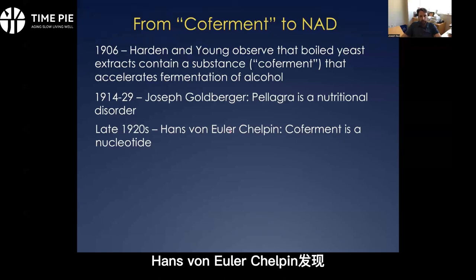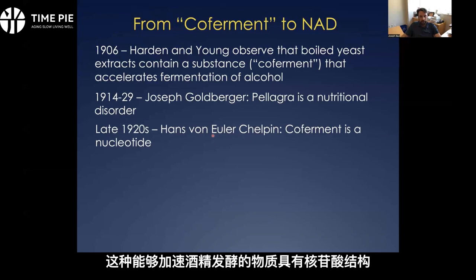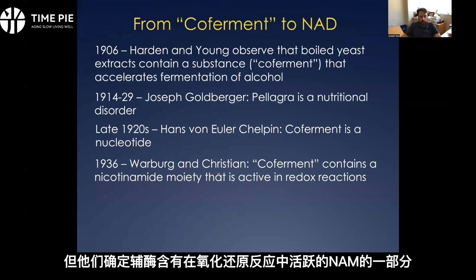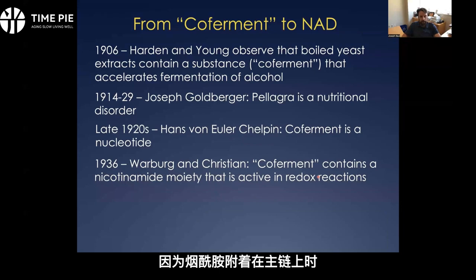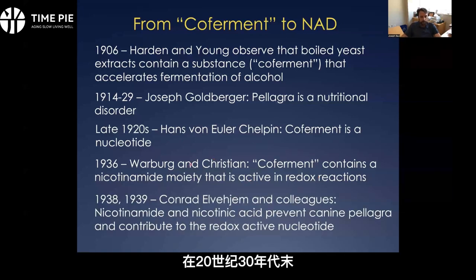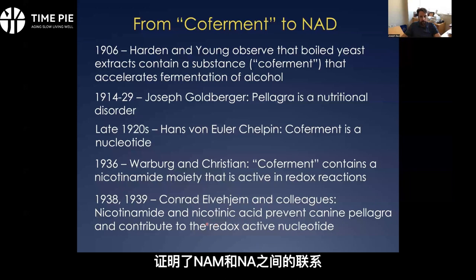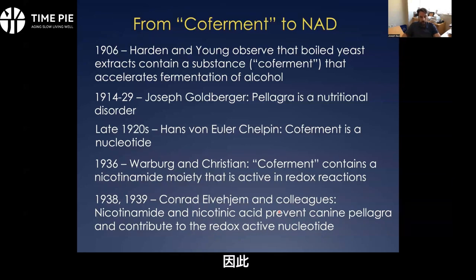In the 1920s, Hans von Euler-Chelpin discovered that coferment is actually a nucleotide — the substance that accelerates alcohol fermentation had a nucleotide structure. Warburg and Christian went on to determine that it actually contains a nicotinamide moiety, which supports the redox reactions, since nicotinamide when attached to a backbone is capable of accepting the hydride ion. Finally, Conrad Elvagem and colleagues put it all together at the end of the 1930s and showed that nicotinamide and nicotinic acid can prevent pellagra and contribute to the synthesis of this redox-active nucleotide, which turns out to be NAD. That tour de force established nicotinamide and nicotinic acid as vitamin B3 — something essential to prevent pellagra — and facilitated curing this disease effectively in western countries.